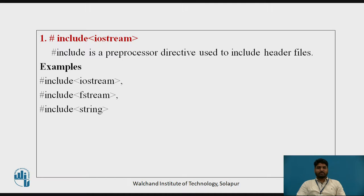First, #include <iostream>. The #include is a preprocessor directive used to include header files. A header file contains declarations of functions, constants, variables, and various classes. The header file iostream.h contains declarations of functions and classes used to perform input and output operations. The C++ standard has defined a new way to specify header files that do not use the .h extension. Examples: #include <iostream>, #include <fstream>, #include <string>.